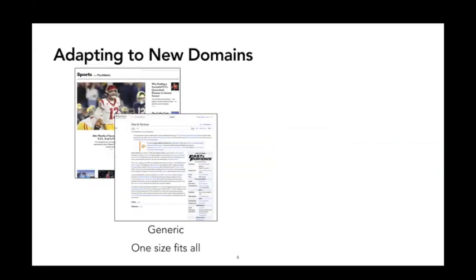Existing LLMs are trained to be general so that they can serve a wide range of use cases. The data used to train these models is obtained from the internet, containing data sources such as Wikipedia articles and newspaper articles.